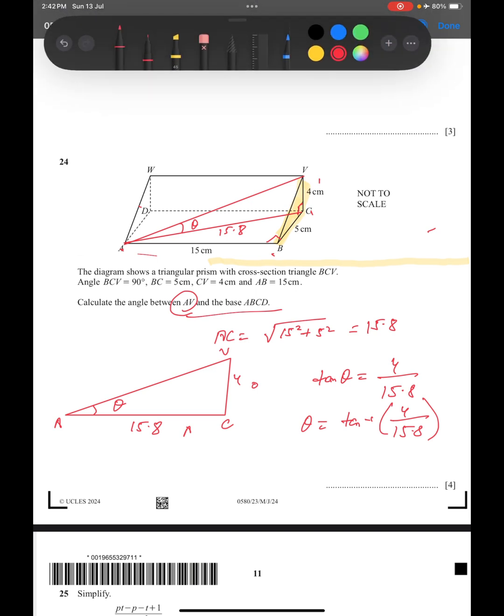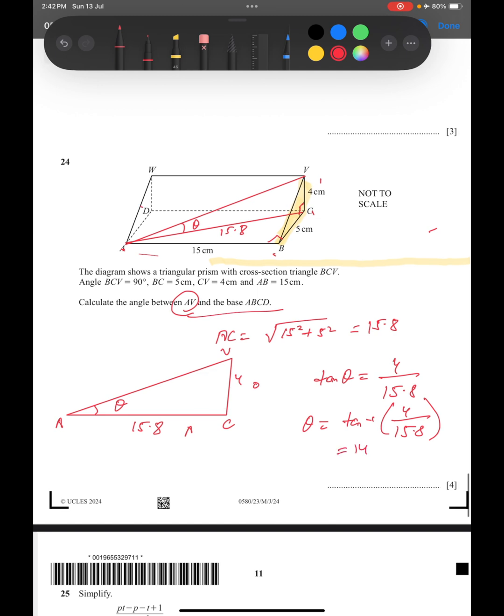So this is 4 divided by 15.8, which gives us 14.2 degrees. So theta is 14.2 degrees, so the angle is 14.2 degrees. That's the answer.